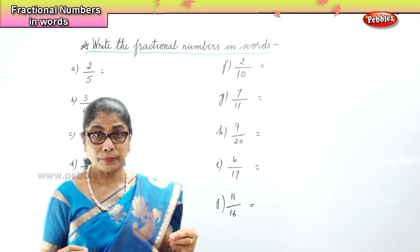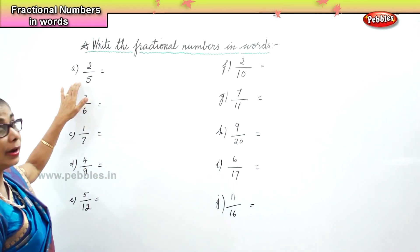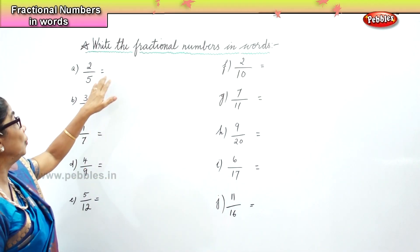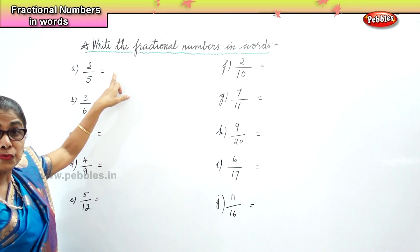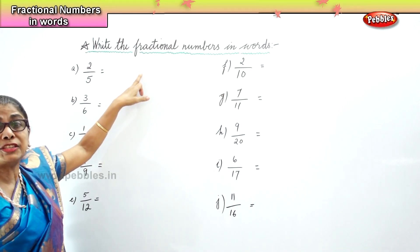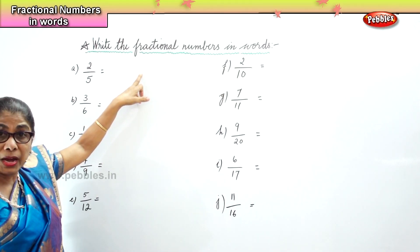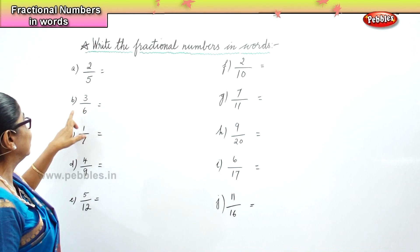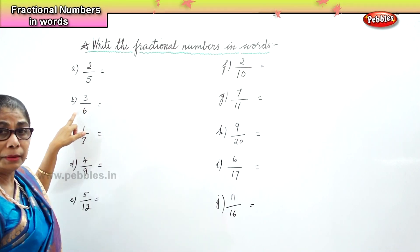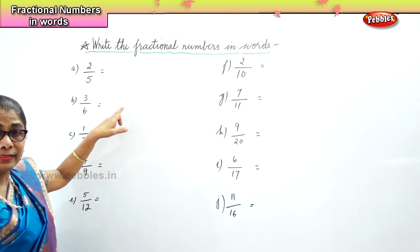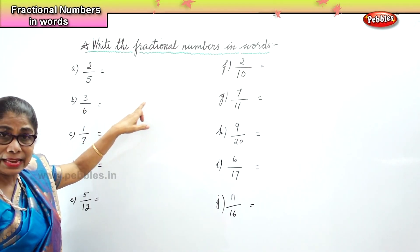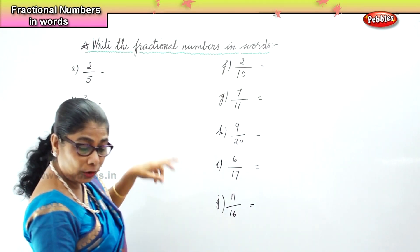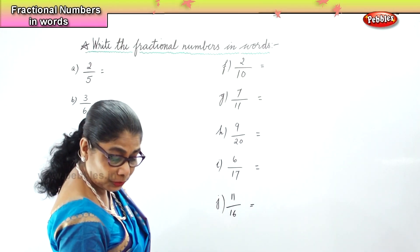Let us look at the first one: 5 by 2, so you will write two fifths — that is two parts out of five parts. Next, 3 by 6 — how will you write that? Three parts out of six parts.